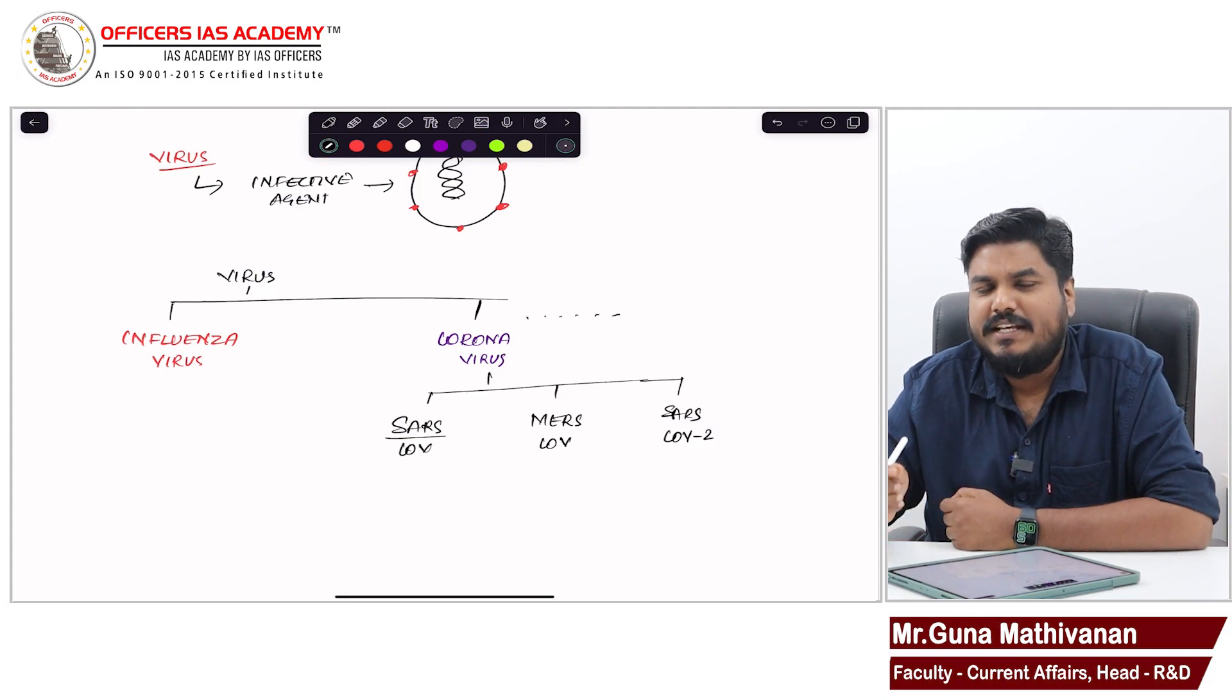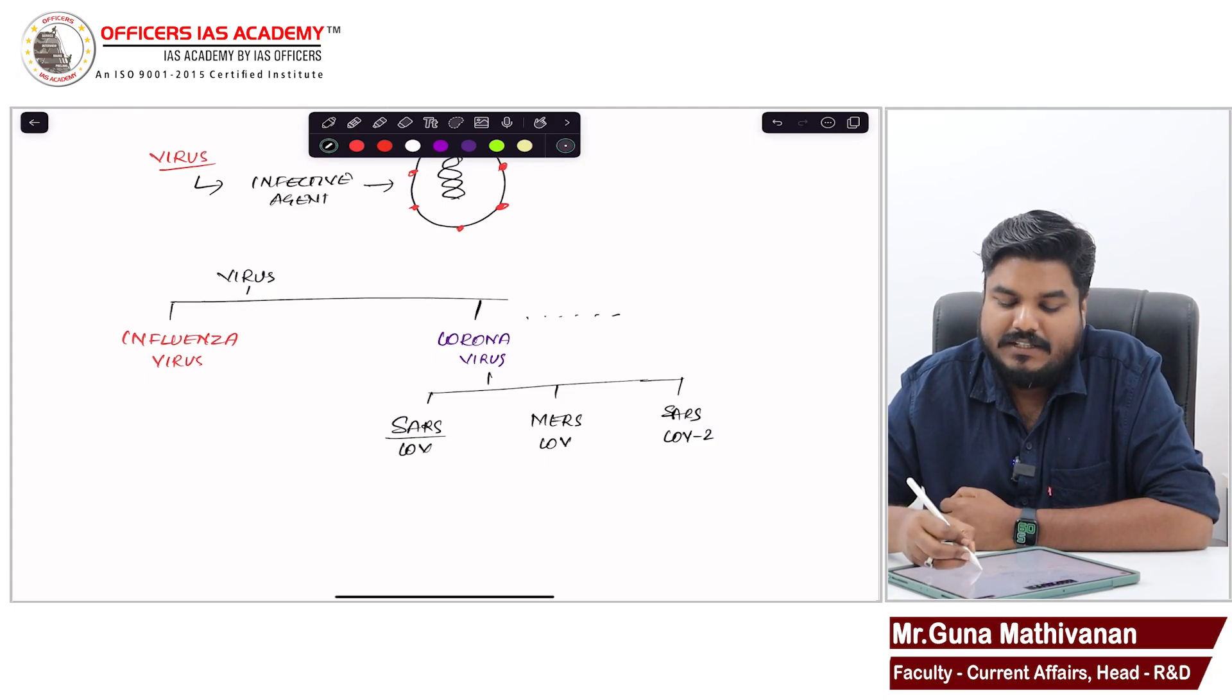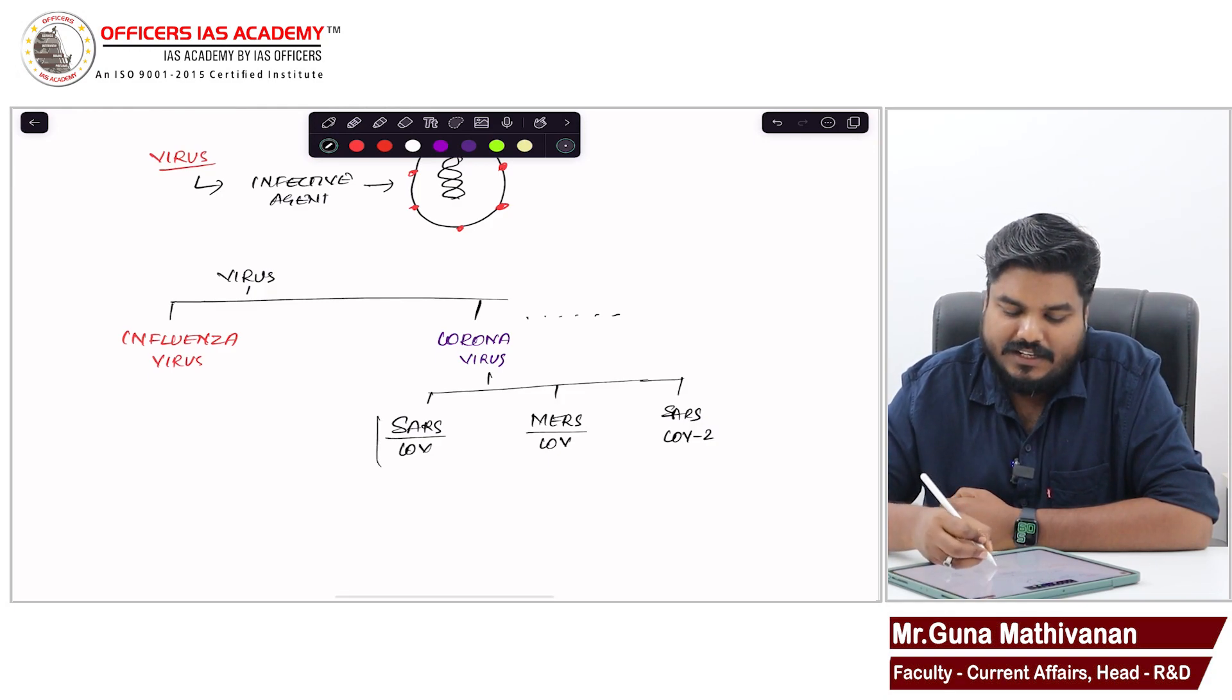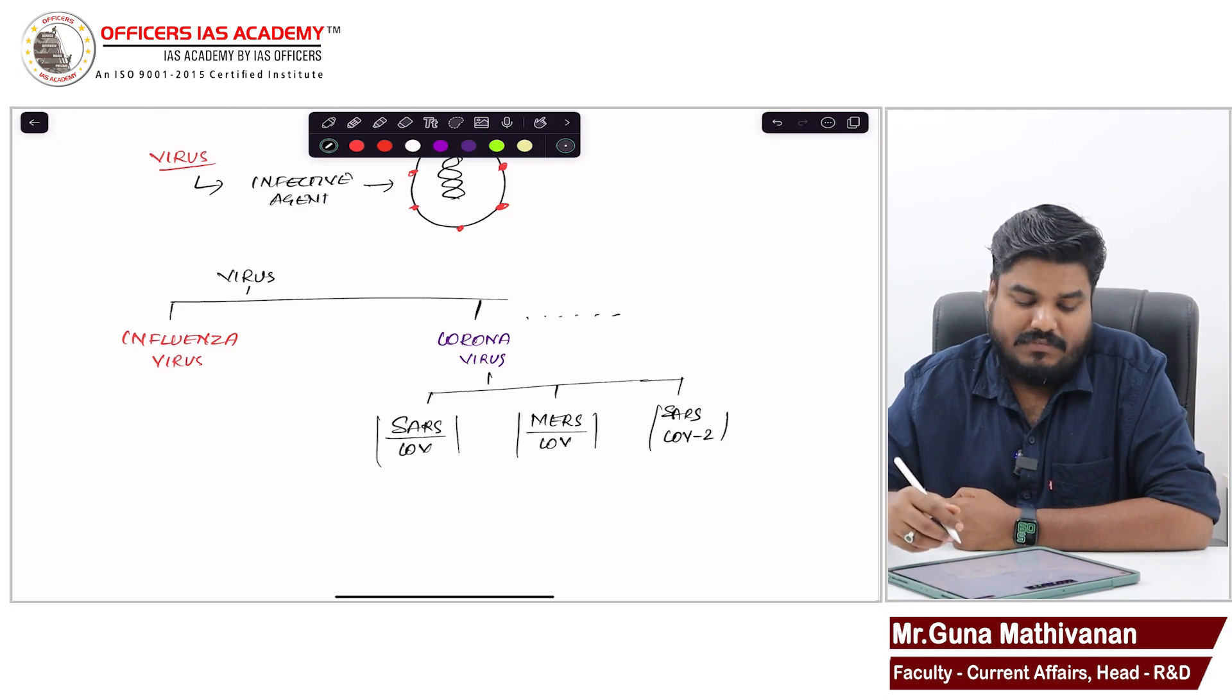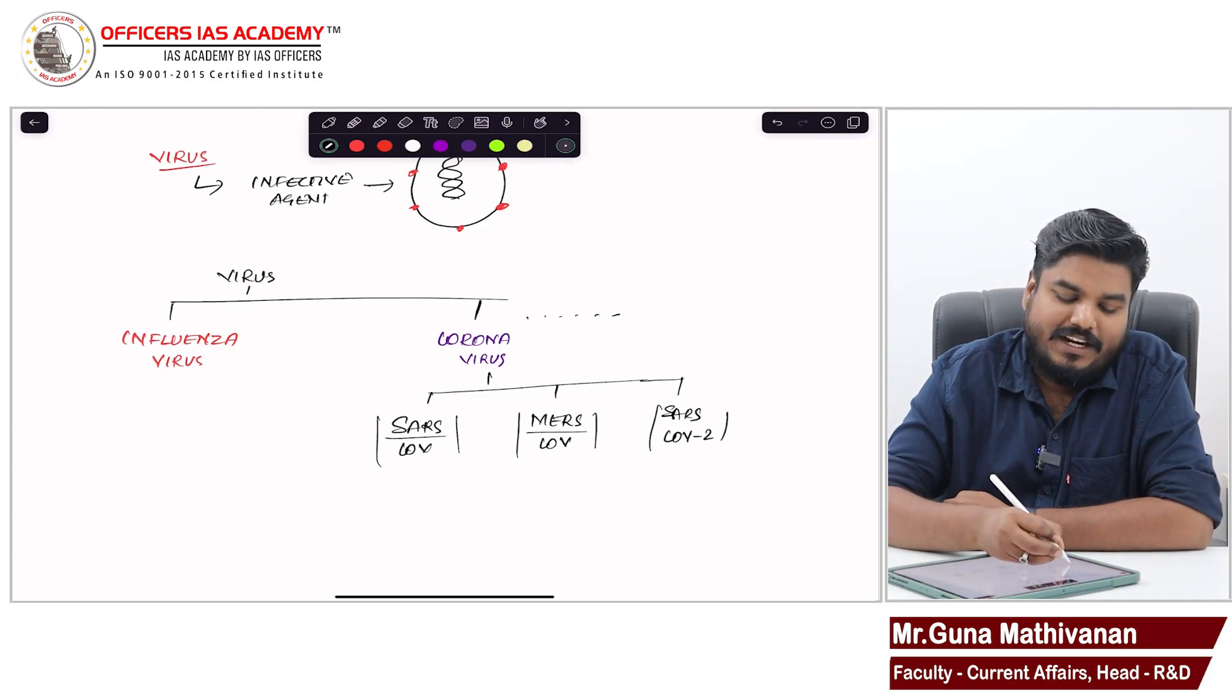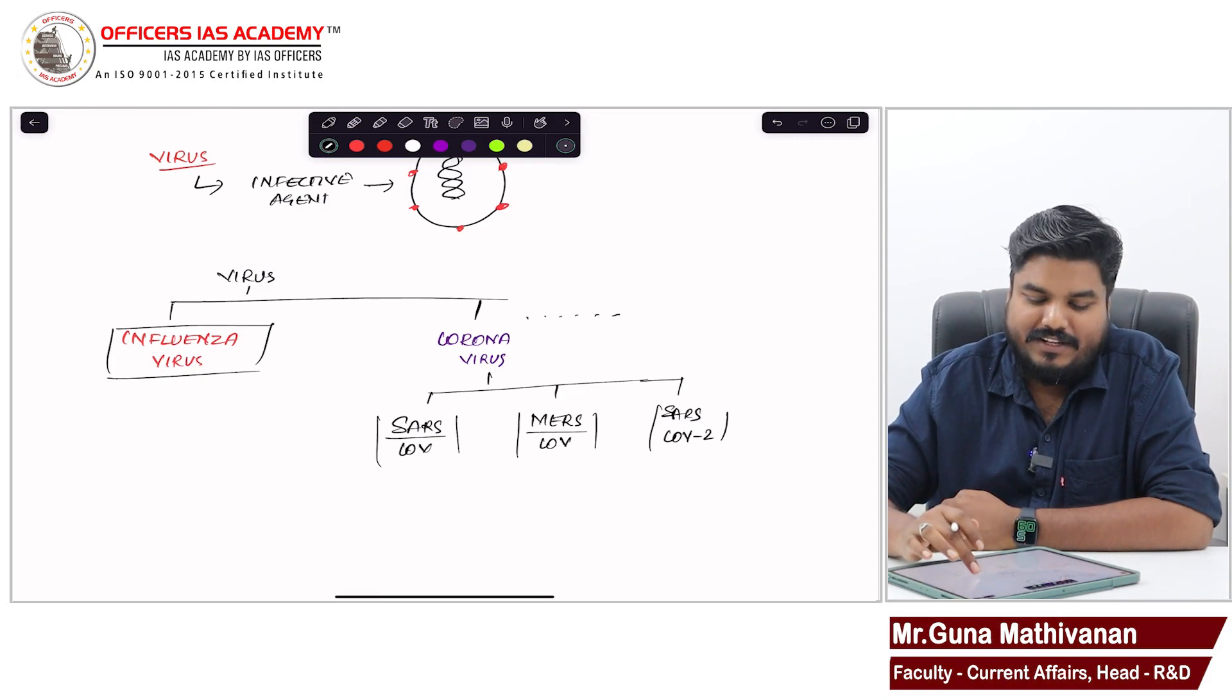SARS refers to severe acute respiratory syndrome. MERS is middle east respiratory syndrome. All these are types of coronavirus. In 2019, what we experienced is SARS coronavirus 2. Now, our interest is to know about influenza virus, so we will focus on influenza.